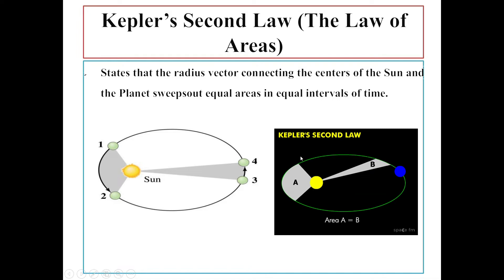You may take other positions: say positions 1 and 2 here, and 3 and 4 here, wherever you want. If the time interval is the same, the area swept will be equal — that is what Kepler's second law, or the law of areas, states. The other name of Kepler's second law is the law of areas.